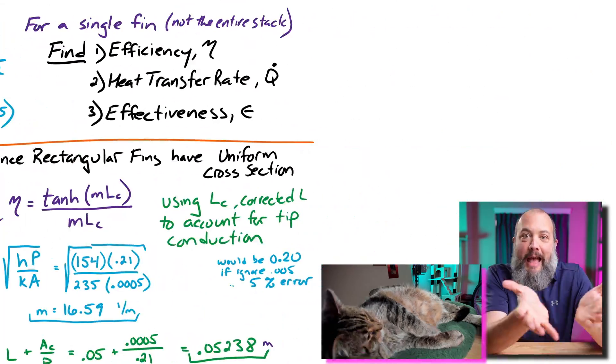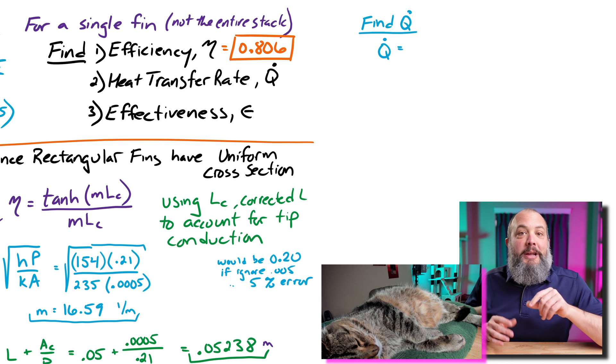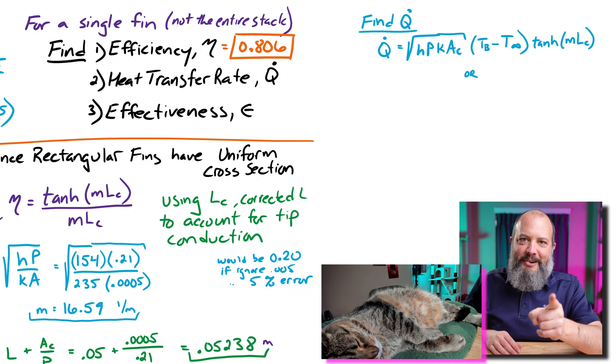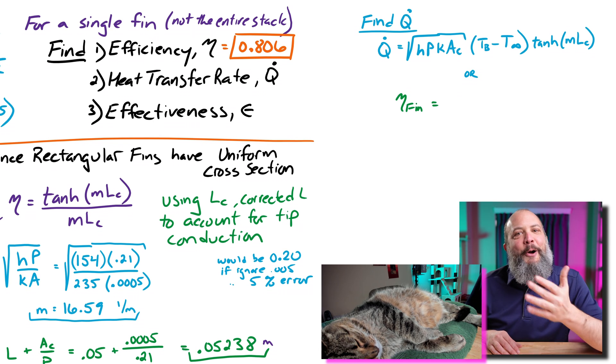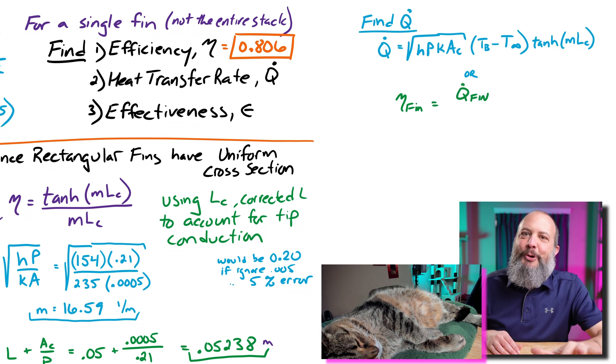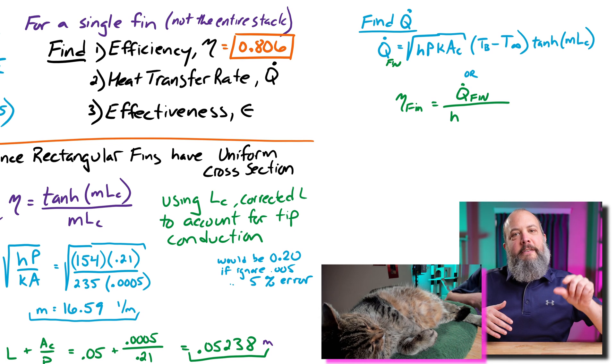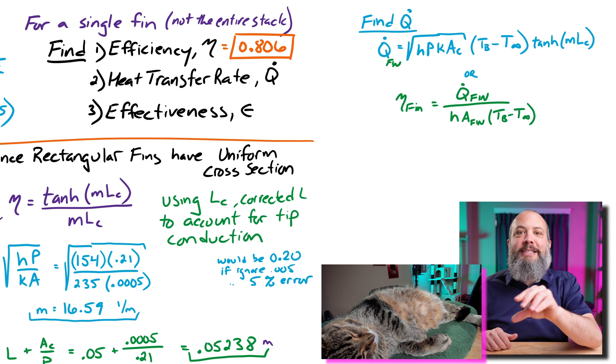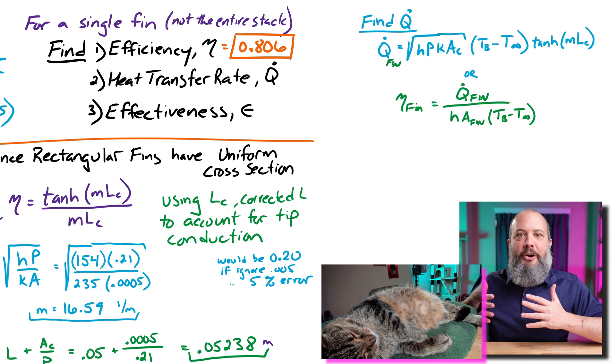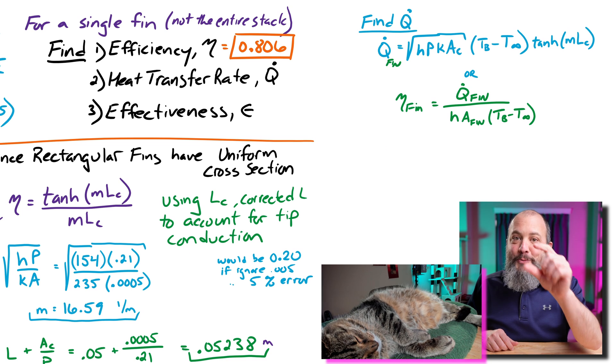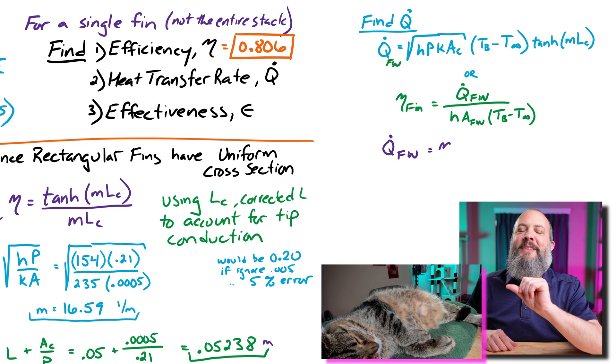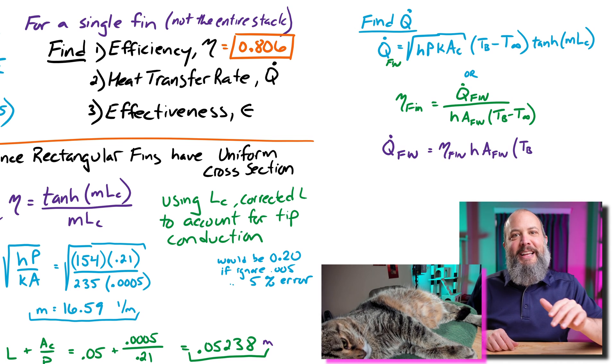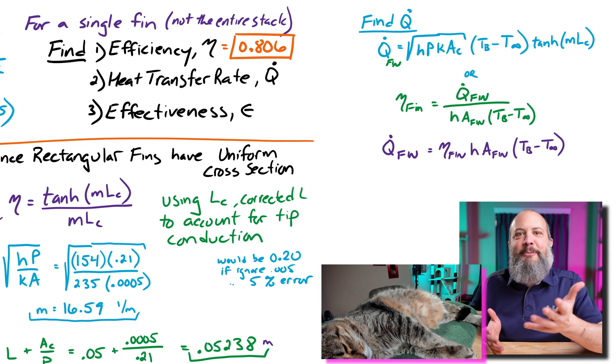So next thing I was trying to find the actual heat transfer from the fin. So if I wanted to, I can grab the fin heat transfer equation and do another hyperbolic tangent, or I could use the fin efficiency that I already found and kind of shortcut this a little bit. Because remember, at the beginning, we defined fin efficiency as the actual heat transfer of the fin divided by the idealized heat transfer if the whole thing were at the base temperature. So if I wanted to find that numerator, the heat transfer of the fin, I can get it with the efficiency that I've already found and with the much easier to find idealized heat transfer if the whole thing were at the base temperature. I know my efficiency 0.8065. I already know H was given 154.